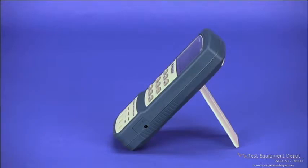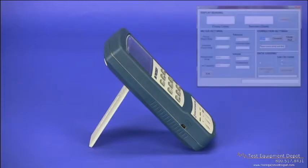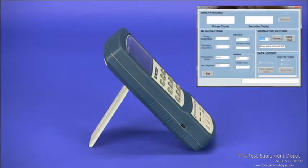The sides of the meter house the AC adapter input and the mini-USB connector for connecting to a PC, allowing communication with free software available for download from bkprecision.com.